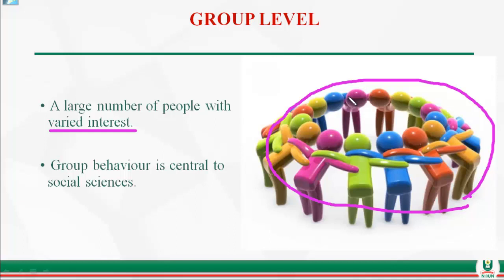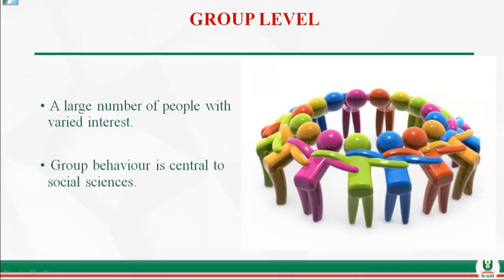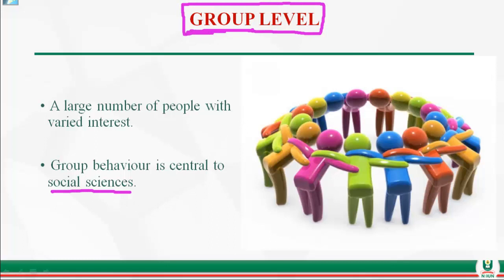For example, in your class right now you are a group, but you have different interests — some want a first class, some are satisfied with a third class. Group behavior is central to social sciences. Programs such as sociology, criminology, political science, and economics all study group behavior, making this level very key.